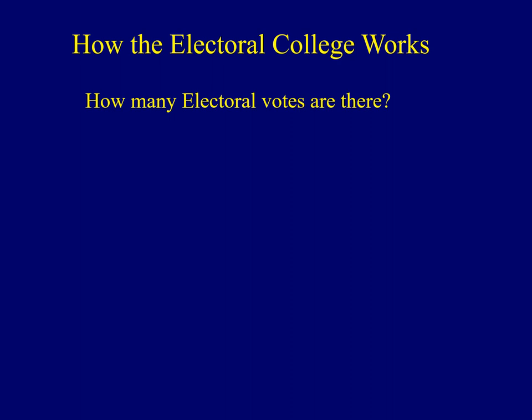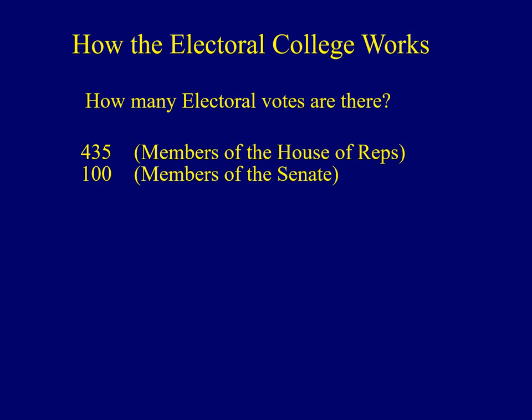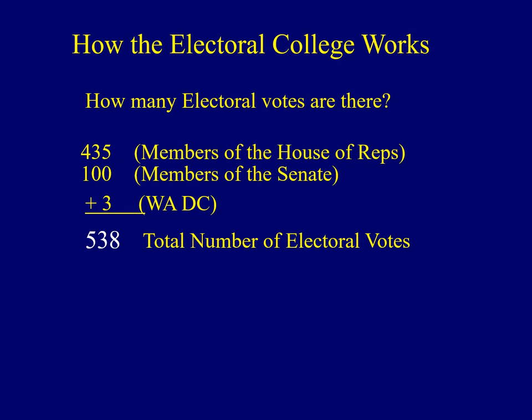How do we get this number of 270? We start with the number 435 — that's the number of members of the House of Representatives. Then you add 100, because that's the total number of members of the Senate. Then you add 3, because Washington, D.C. is not a state, but it's treated like a state when it comes to a Presidential election. The total number of electoral votes available is 538. A majority, or over half of 538, is 270. That's where we get the number of 270 electoral votes that a candidate needs in order to win the presidency.